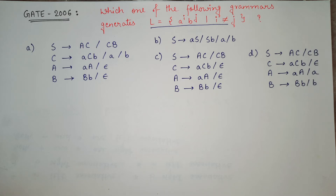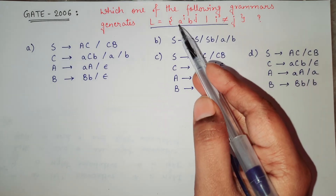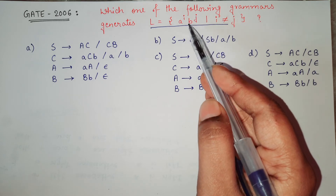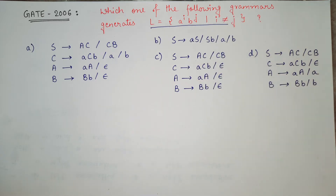What this means is: i is the number of occurrences of 'a' and j is the number of occurrences of 'b', and we need i not equal to j. So out of the four grammars given in the options, we have to tell which one generates a different number of a's and b's.